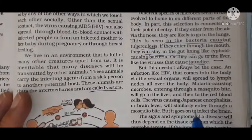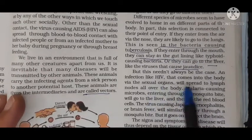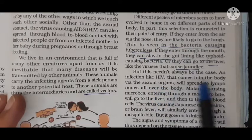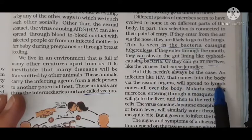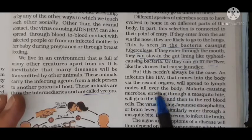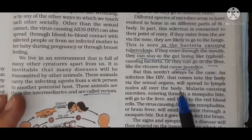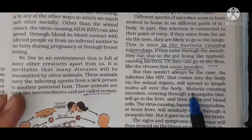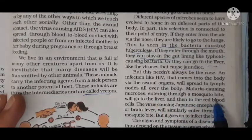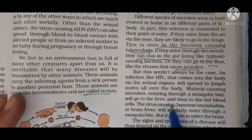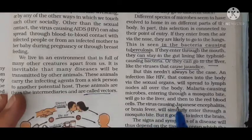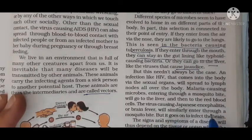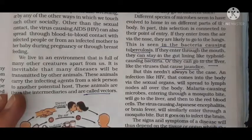An infection like HIV, which enters the body through sexual organs, will spread to lymph nodes all over the body - lymph nodes are found throughout the body. Malaria-causing microbes entering through a mosquito bite first go to the liver and then spread to the blood cells. The virus causing Japanese encephalitis or brain fever also enters through a mosquito bite but goes to the brain and infects it.